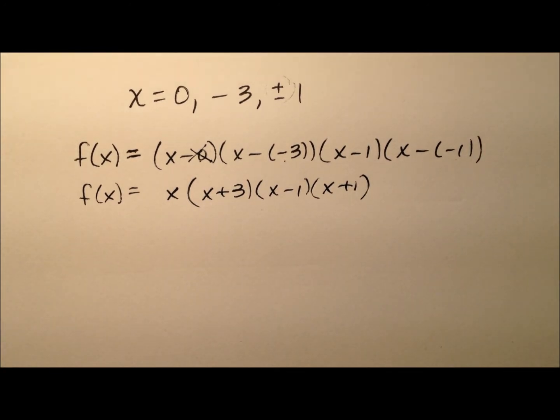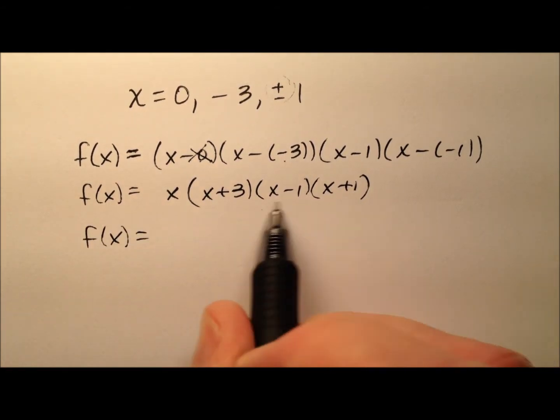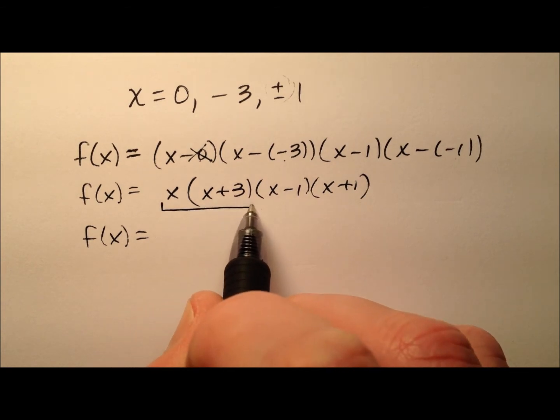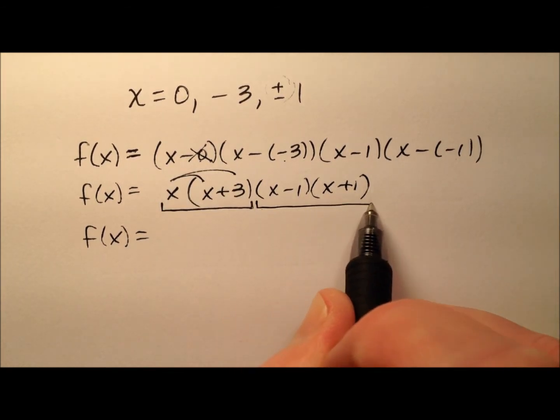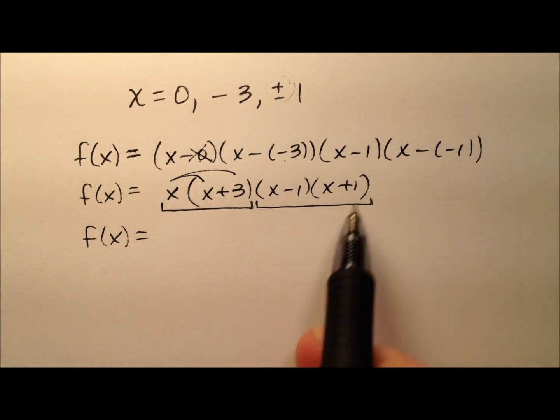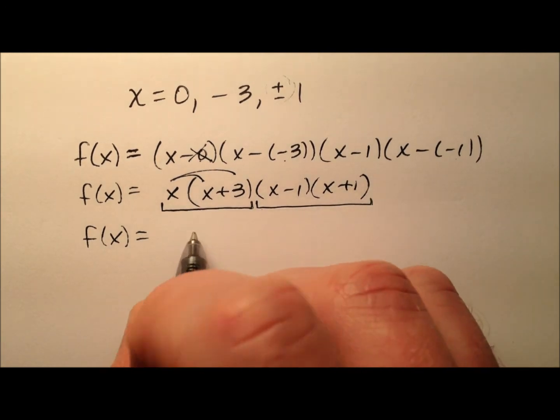So to write this in standard form, I'm going to need to multiply all this out, and that won't be too bad because I have some nice patterns here. I can multiply the first two because that's a simple distribution, and the last two I can multiply easily because that's just the difference of squares factorization.